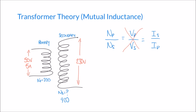Rearranging to the form Is equals: multiplying both sides by Ip gives Is equals (Np over Ns) multiplied by Ip. Substituting values — Np is 200, Ns is 920, and Ip is 5 amps — calculating that gives a secondary current of 1.09 amps.